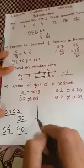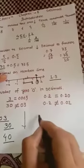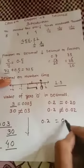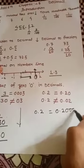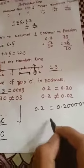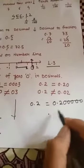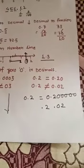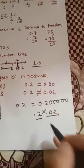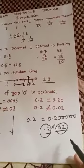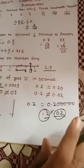In decimal form, this rule is reversed. If we write 0.2 and put zeros after it — like 0.20 or 0.200 — the value does not change. But if we put zeros on the left side of the decimal digit, for example changing 0.2 to 0.02, the value does change. So in decimals, adding zeros to the right does not change the value, but adding zeros to the left of the decimal digits does change the value.